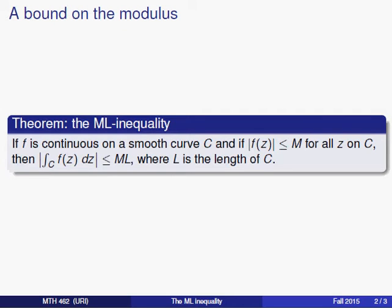Now the ML inequality draws its name from the actual inequality you see in the theorem here. And the theorem is simply that if f is a continuous function on a smooth curve C, and if we can bound the modulus of f on that curve by this real number M, then actually the modulus of the integral as a whole can be bounded by ML, where L is the length of the curve.